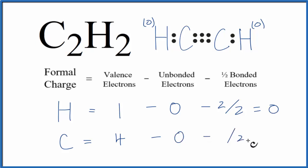And then we'll subtract half of the bonded electrons. So we have 2, 4, 6, 8. 4 minus 4, that's zero. So the formal charge on the carbon here, that's zero.